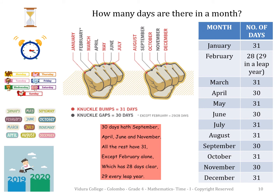Children, can you see the poem given? You can use this poem also to remember the number of days in a month. Can you read the poem with me? 30 days have September, April, June, and November. All the rest have 31, except February alone, which has 28 days clear, 29 every leap year.